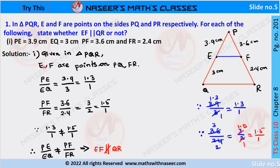The first given data: in triangle PQR, E and F are points on PQ and PR. To check whether EF is parallel to QR, we have to find the corresponding ratios. So PE by EQ is equal to 3.9 by 3. After cancellation we get 1.3. The other ratio PF by FR is written as 3.6 by 2.4.